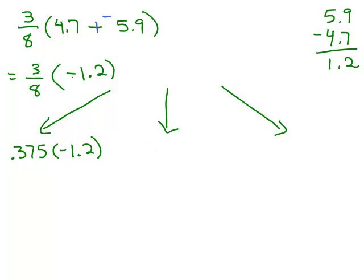Another possibility is write negative 1.2 as a fraction. So notice there's only one digit after the decimal point so you could write that as 3/8 times negative 12/10. See how I'm writing that as a fraction? And the other way is to write this as 3/8 times negative 1.2 over 1 and then we'll multiply the numerators and denominators together. These are all valid approaches to this problem.